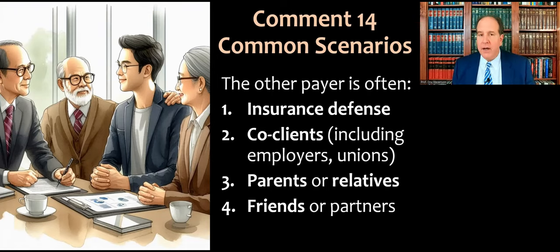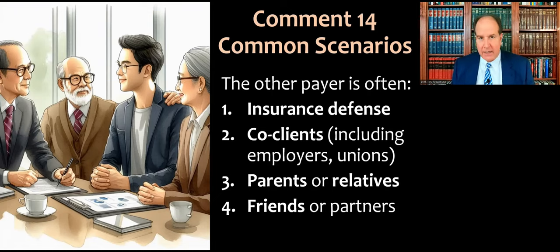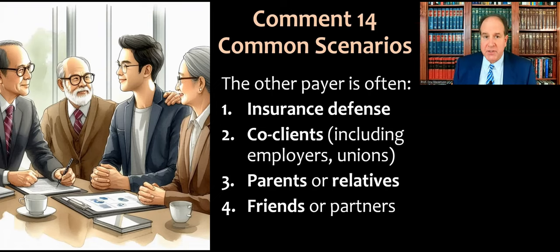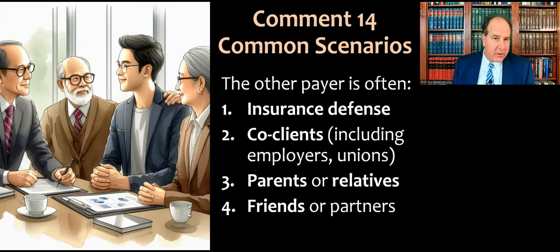Co-clients are very common. Employers too — if someone sues an employee and the company they work for, because usually the company is a deeper pocket and employees are often judgment-proof, the company being sued will often fund the lawyer for the employee. A labor union sometimes funds legal costs for one of their members. Parents, especially of college-age students who get arrested for driving drunk, will often hire the lawyer. It could also be friends or a romantic partner like a boyfriend or girlfriend.